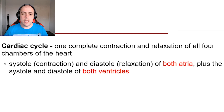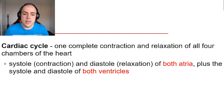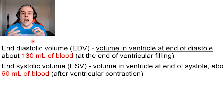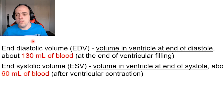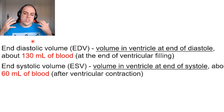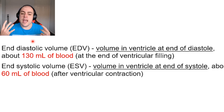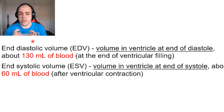The cardiac cycle describes the complete contraction and the complete relaxation of all four chambers. When looking at the cardiac cycle, there are two main variables: end diastolic volume (EDV) and end systolic volume (ESV). The end diastolic volume refers to the amount of blood in the ventricle at the end of diastole — the end of the filling stage. The end systolic volume is the amount of blood left over at the end of the contraction of the heart.